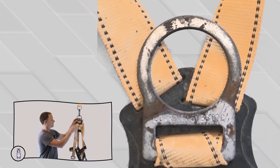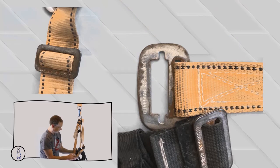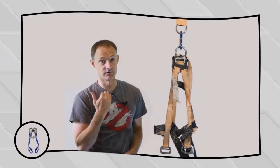In this example, there's tons of rust right here on the side of the D-rings. Buckles are all rusted. Some very heavily rusted. If you find rust, that's it. You've got to get it out of service.